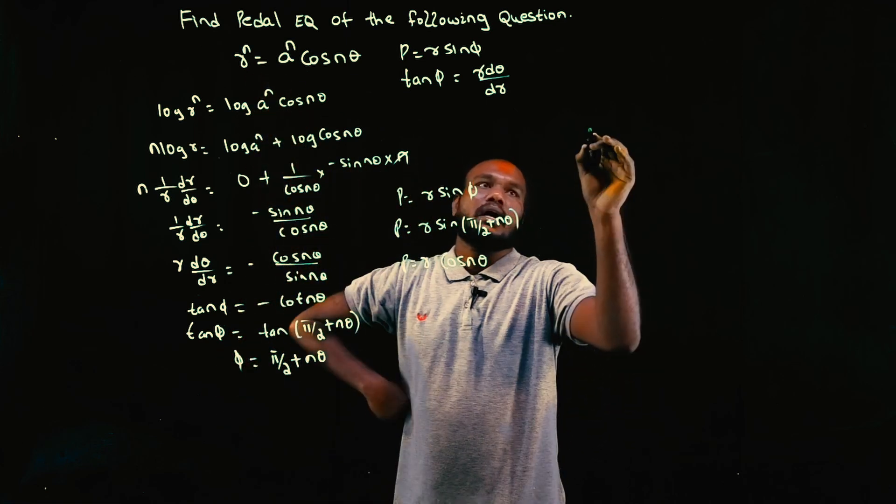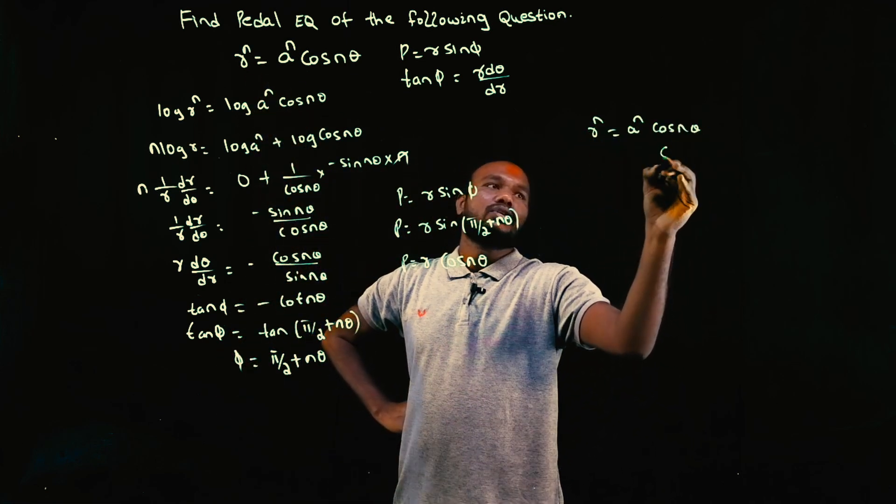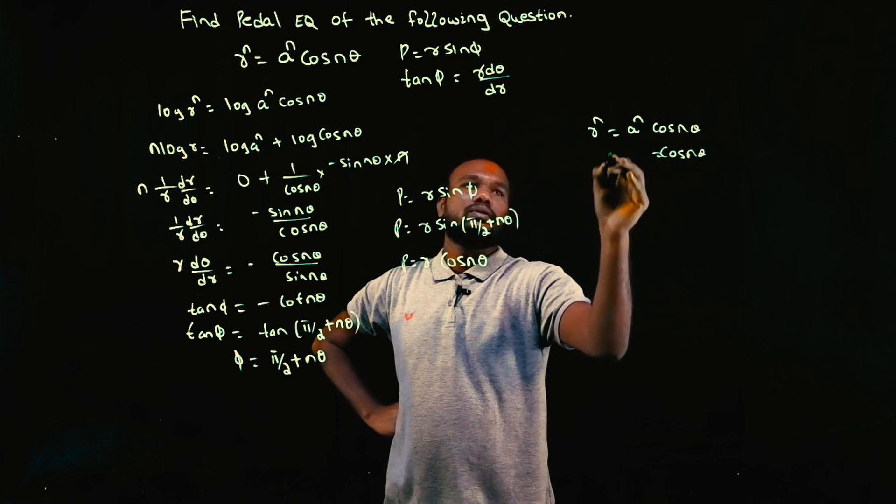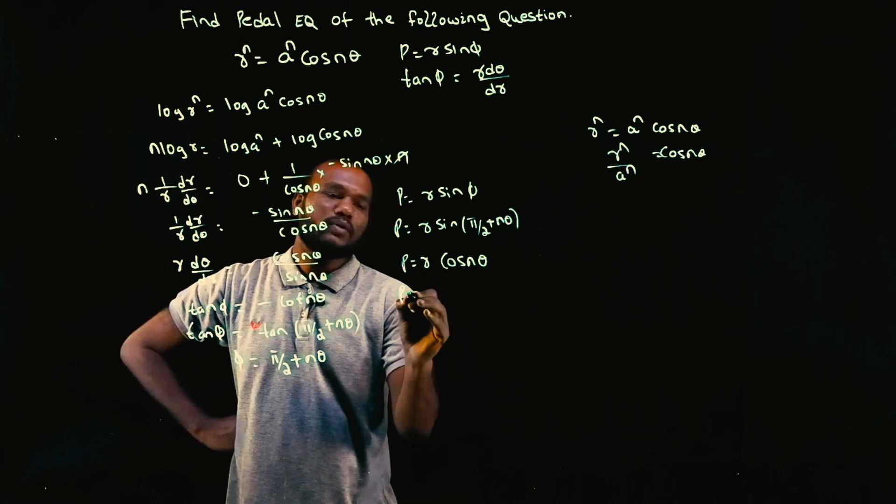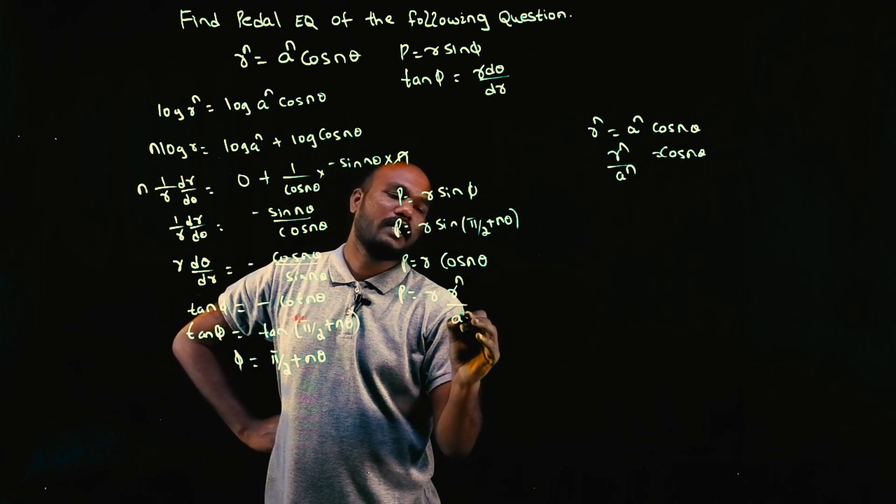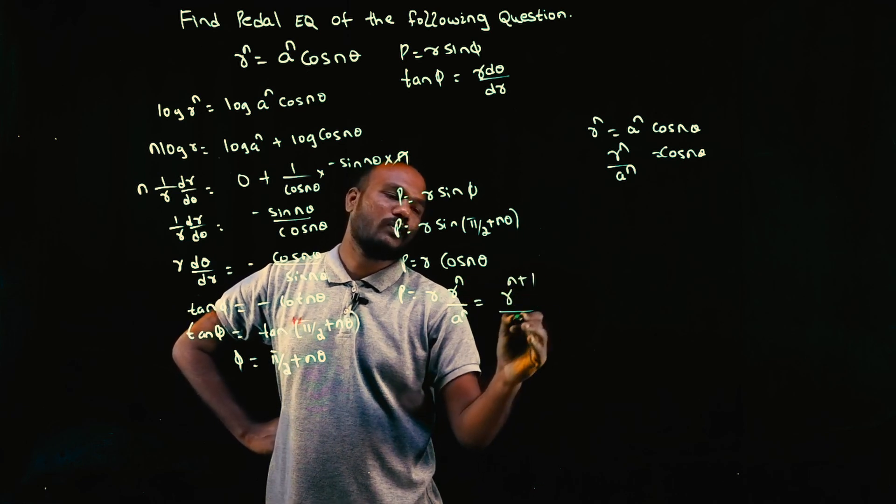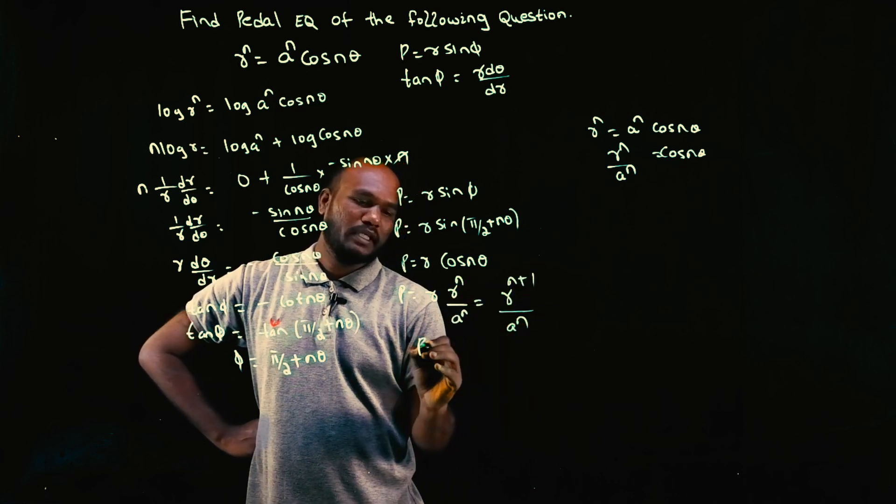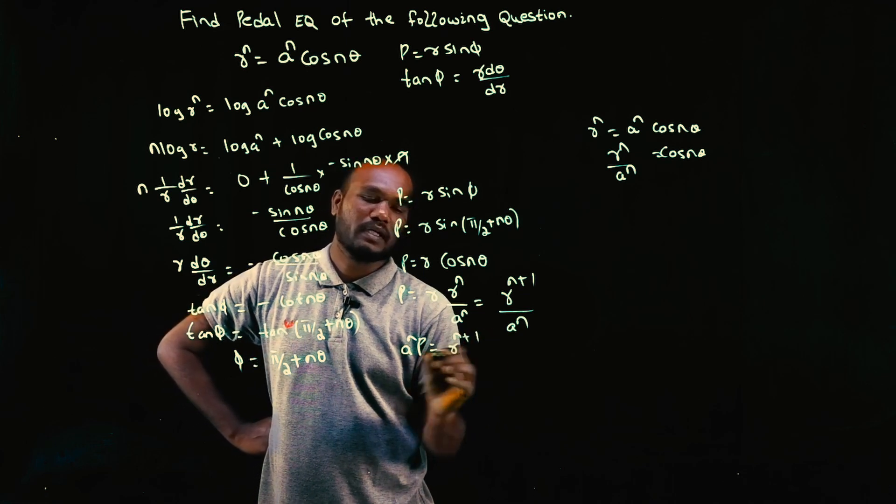How to find cos n theta? R^n equal to A^n cos n theta. So cos n theta is equal to R^n by A^n. So P is equal to R into cos n theta value, that is R^n upon A^n. That is R^(n+1) over A^n. So P^n is equal to R^(n+1).